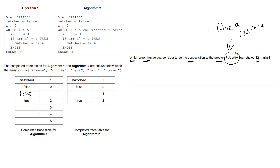On the next iteration, one is added to i so it becomes two, and because diffy is stored in location two, matched now changes to true — so we've found diffy at location two. The way this while loop works is that it will iterate through i from one, two, three, four, five — it has to go all the way through before the loop ends. This means there's wasted time here because we found the match and didn't need to look at the rest of the array.